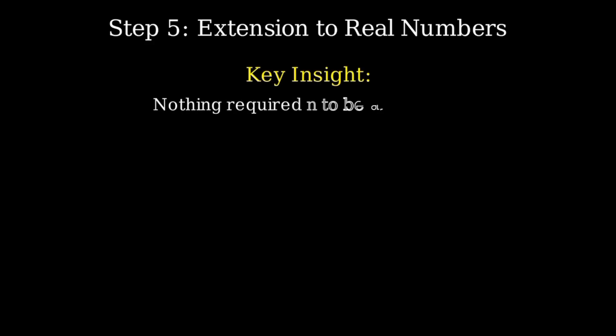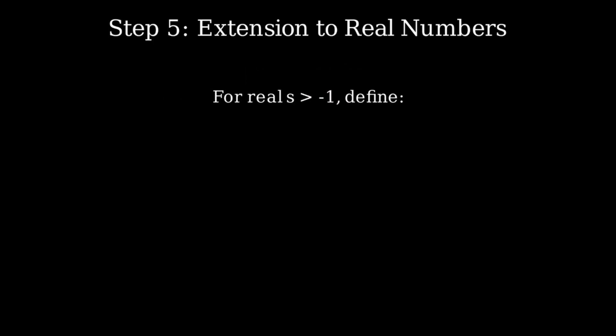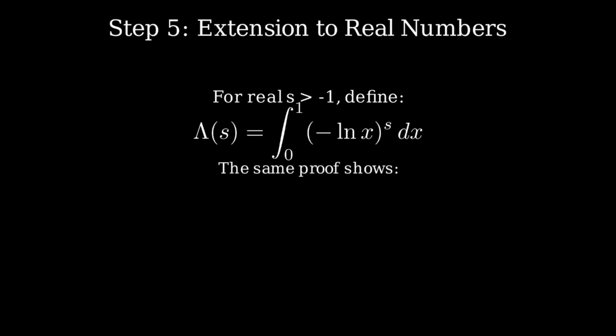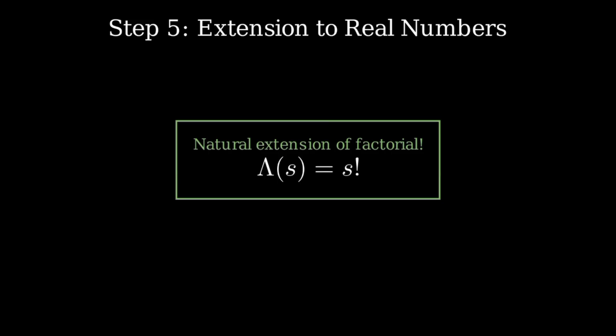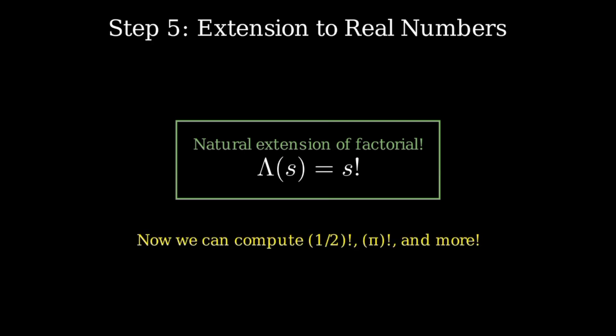Now here comes the truly beautiful part. Look back at everything we did — we took derivatives, created products, integrated, applied the fundamental theorem of calculus. Nowhere in our entire derivation did we require n to be an integer. We never assumed n was a whole number. Everything works just as well if n is any real number. So we define λ(s) = ∫₀¹ (-ln x)^s dx for any real s > -1. The exact same proof shows λ(s) = s · λ(s-1). This is the natural extension of factorial to all real numbers: λ(s) = s! for any real s > -1.